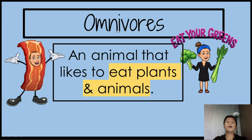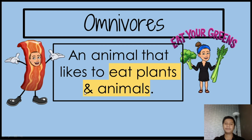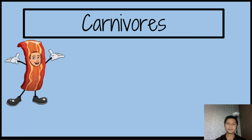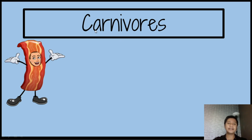This is what we call omnivores — an animal that likes to eat plants and animals. Very good! And the last one is what we call carnivores. Can you spell carnivores? C-A-R-N-I-V-O-R-E-S — carnivores.